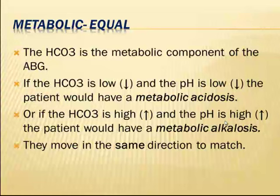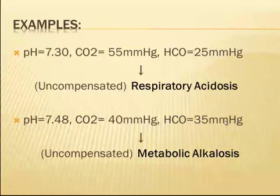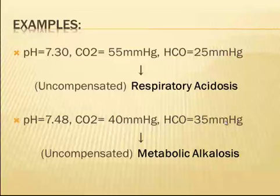Let's look at a few examples. If the pH is 7.30 — below normal, so acidosis — and the CO2 is 55, which is above normal, and the bicarbonate is 25, which is within normal limits, then the problem is with the carbon dioxide. This is a respiratory problem. Since the pH indicates acidosis, the diagnosis is uncompensated respiratory acidosis.